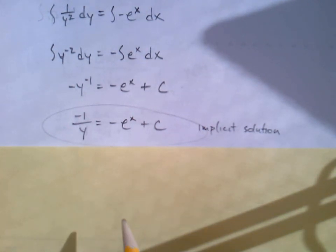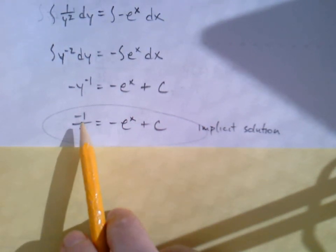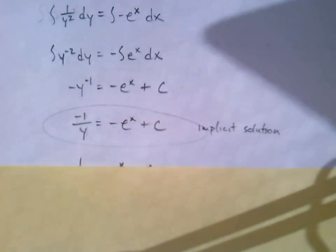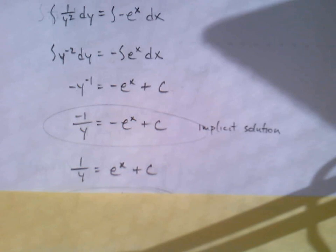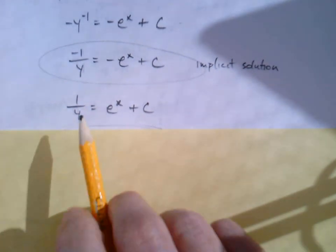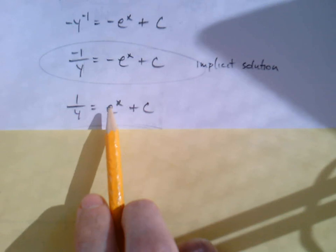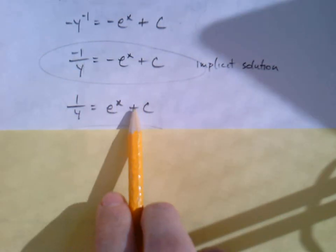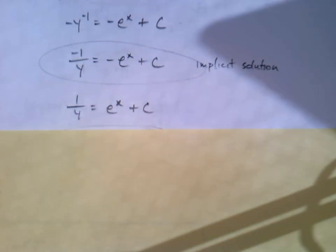Usually if we can get an explicit solution we really prefer that, and here it's not too bad. At this point, let's multiply everything by a negative. Now you probably thought that I messed up. I multiplied this by a negative, I multiplied that by a negative - shouldn't it be minus C? Why is it still plus C?